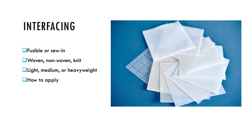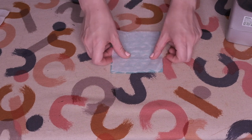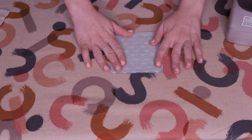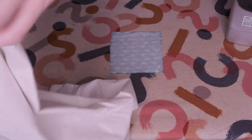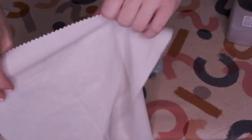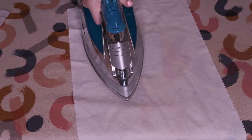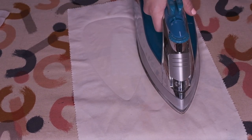If you're using a lightweight fabric you'll want to use a lightweight interfacing. Similarly, if you are using a heavyweight fabric you'll want a heavyweight interfacing. To apply fusible interfacing, lay the fabric with the wrong side facing up on your ironing board. Place the fusible interfacing with the bumpy or glue side down on the wrong side of your fabric. Then place a damp press cloth on top. Iron for 15 seconds on high heat. Pick up and move the iron to the next section and repeat until all of the interfacing has fused.